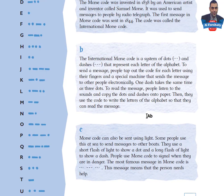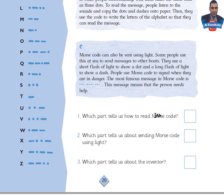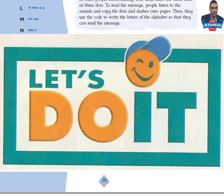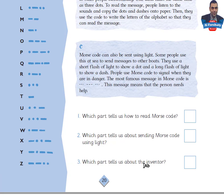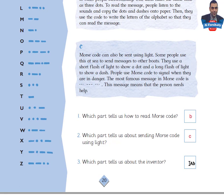Dear students, when you read, try to underline any difficult word and look it up in a dictionary in order to understand the meaning. You are asked here to read and to understand. Now read again and try to answer these questions: Which part tells us how to read Morse code? Which part tells us about sending Morse code using light? Which part tells us about the inventor? The answers: number one is B, number two is C, and the last one is A — the part which tells us about the inventor Samuel Morse.